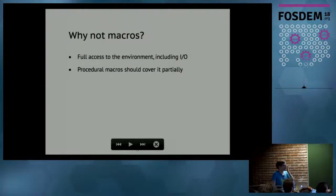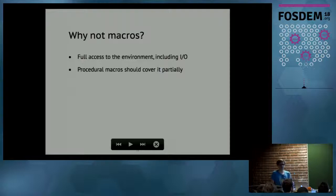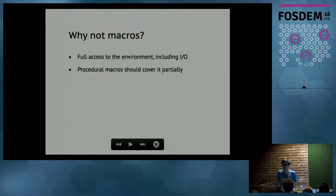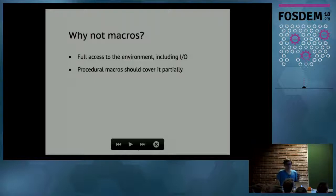Why do we use ASTs and parsing instead of just going with macros? First of all, macros don't have access to the environment that you run your program in. Macros are isolated by the compiler context — they can't access input/output, they can't read a file from your file system, they can't go to the network, and so on. By parsing your code, you have all the power that the Rust language and your full environment provide. The second aspect is that macros 2.0, which should be available in the Rust compiler soon, should cover at least a part of these use cases, so you might want to follow that closely.